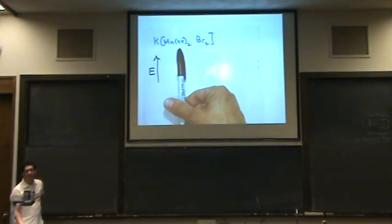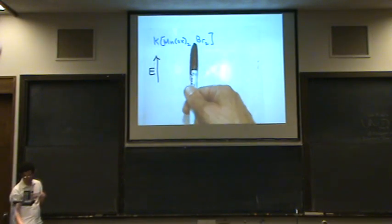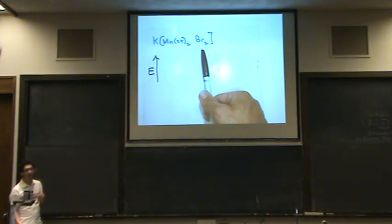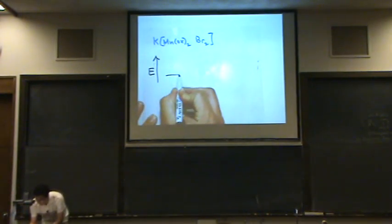However, this is a bidentate. So each one of these counts as two. So one oxalato is two, two of them is four because they're bidentates, they're attaching in two places. So we've actually got six. Four for this one and two more for this set. So total six, this is octahedral. Let's draw the octahedral picture.